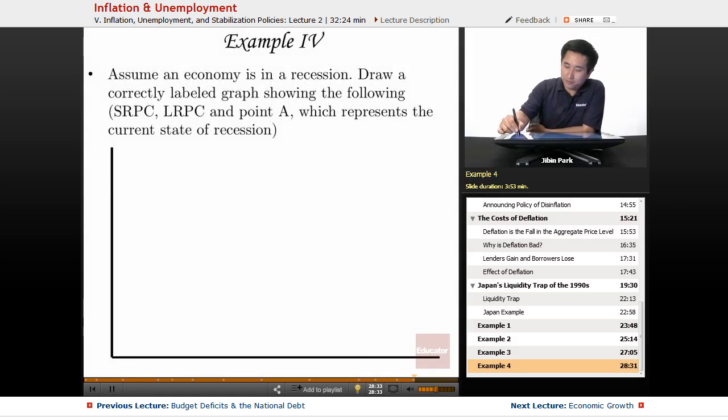In the final example, assume an economy is in a recession. When you're drawing an aggregate demand-aggregate supply curve, the potential output is going to be to the right of the actual output.